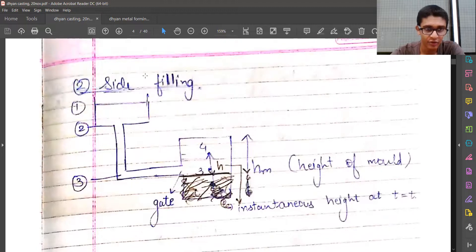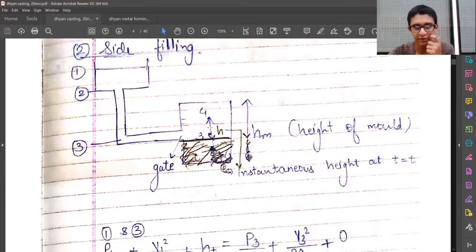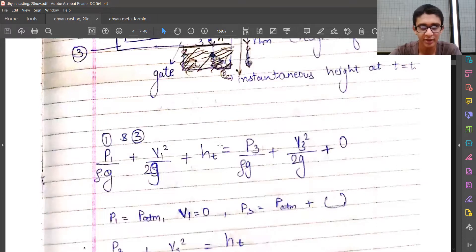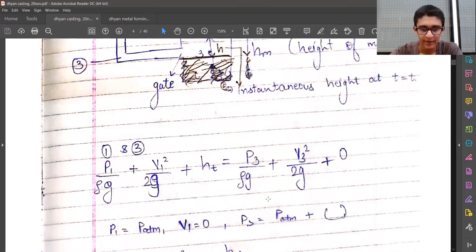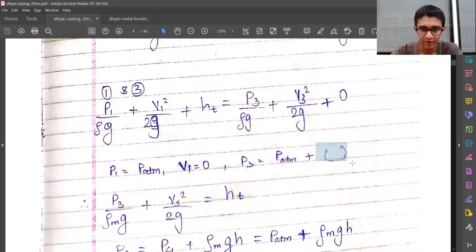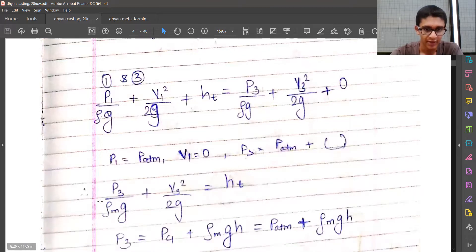v1 is zero because we're going to keep pouring the metal until the mold is filled up. Hence, the location of the free surface will effectively not move, or even if it's moving, it's at very small velocities. p3 equals patm plus some part, so we need to figure out what the extra term is.